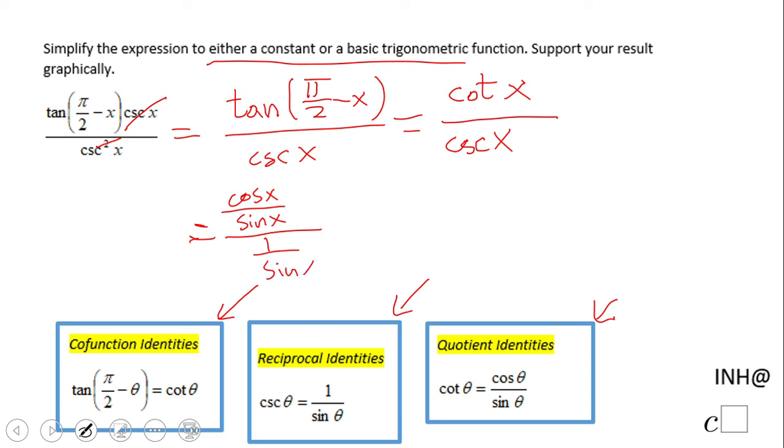So these two cancel out. The final answer looks like it's cosine of x over one, which is nothing other than cosine of x. As you notice, it simplified to a basic trigonometry function.